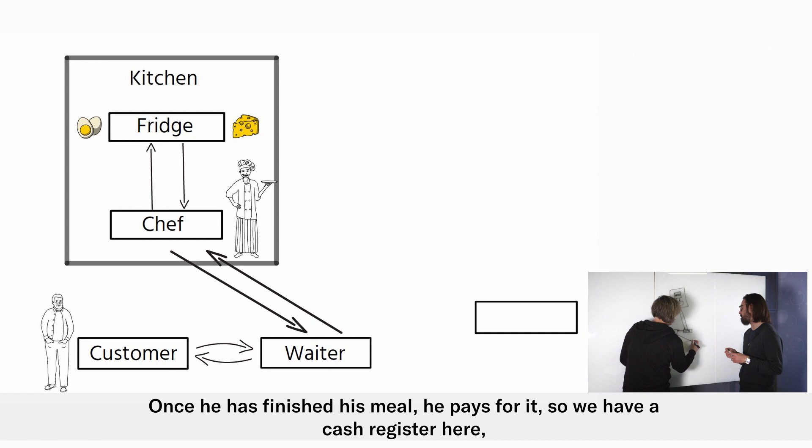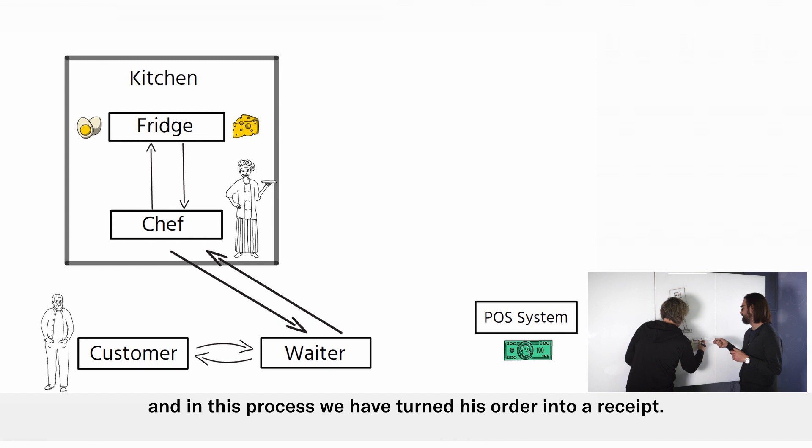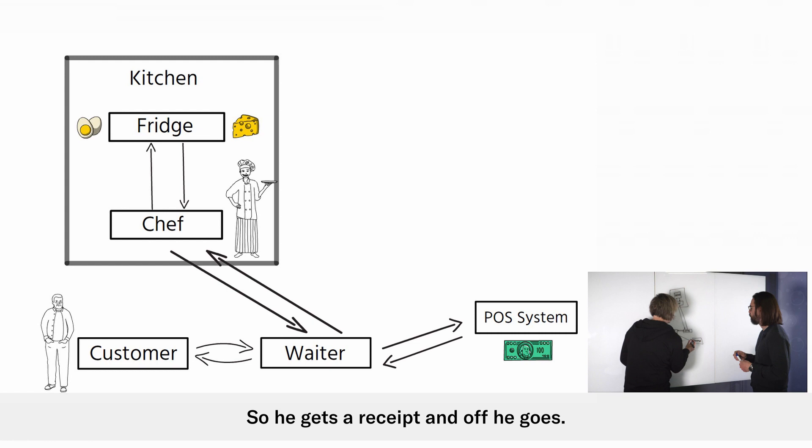Once he's finished his meal he pays for it. So we have a cash register here. And in this process we have turned his order into a receipt. So he gets a receipt and off he goes.